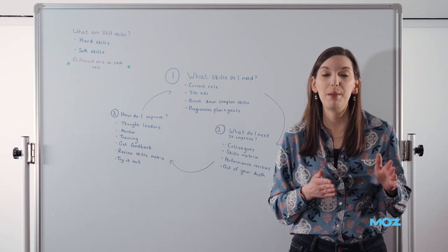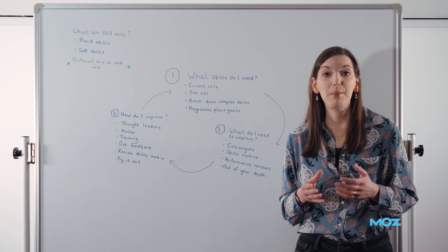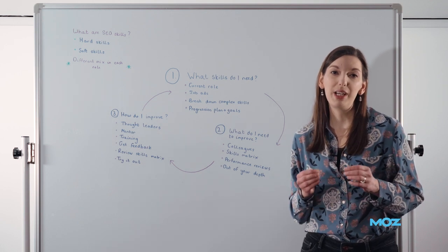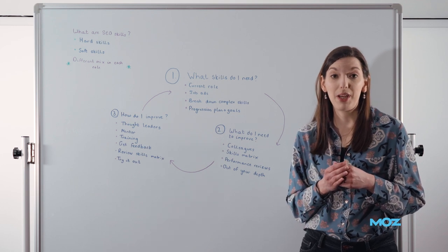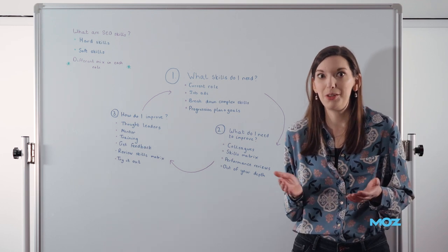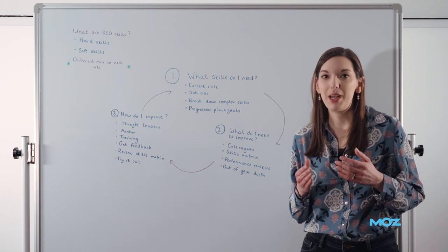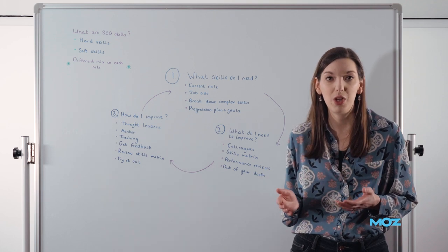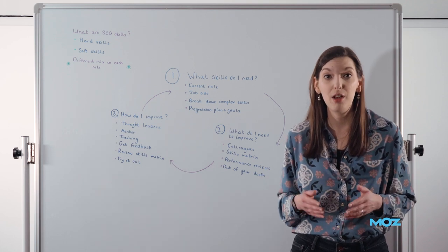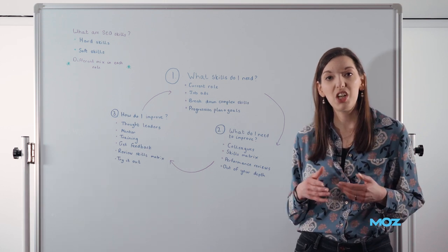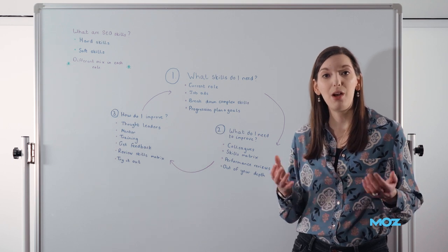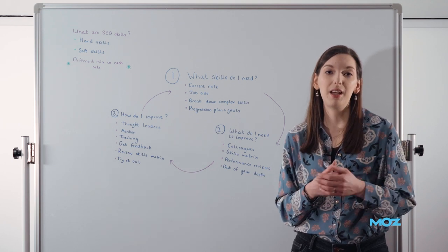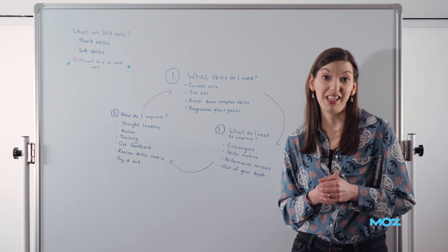Now, these might not be people in the SEO industry, but they might be experts in other fields. But try to find people who really excel at the kind of skills that you want to develop. So if you want to get better at persuasive communication, follow some politicians. If you want to get better at understanding how development cycles work and how you can get buy-in from engineers, follow some engineering managers. But start to understand from the people who really excel at those kind of skills that you're looking to improve, how they do things and how they develop and practice their skills.